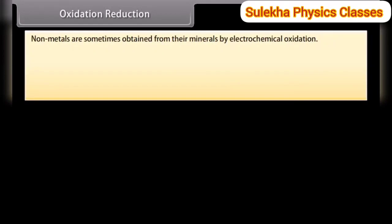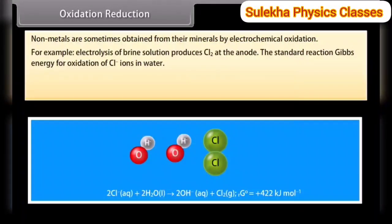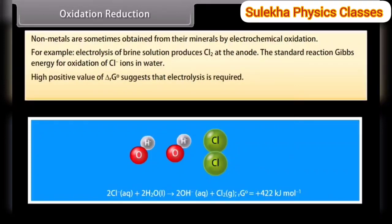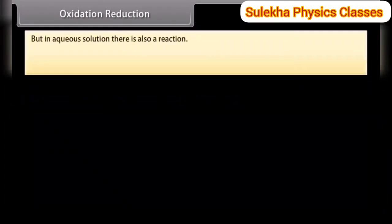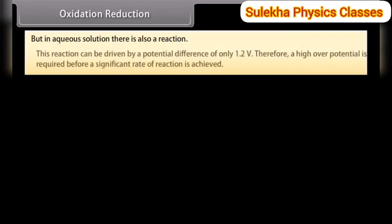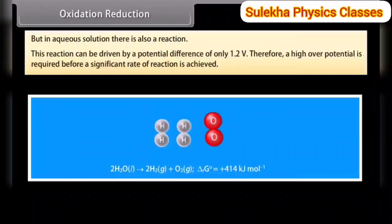Oxidation-reduction. Non-metals are sometimes obtained from their minerals by electrochemical oxidation. For example, electrolysis of brine solution produces Cl₂ at the anode. The standard reaction gives energy for oxidation of Cl⁻ ions in water. A high positive value suggests that electrolysis is required. The minimum potential difference to achieve oxidation of Cl⁻ ions is about 2.2 V (n = 2). However, in aqueous solution there is also a competing reaction driven by only 1.2 V; therefore, a high overall potential is required before a significant rate of reaction is achieved.